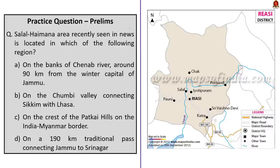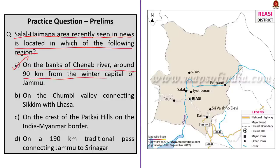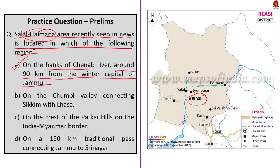The next question asks about the Salal-Haimana area recently in news. The correct answer is Option A — it is located on the banks of the Chenab River, around 90 km from the winter capital of Jammu, in the Reasi district of Jammu. It was in news because of the discovery of lithium-inferred resources.